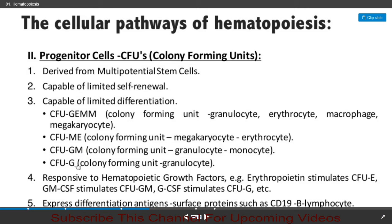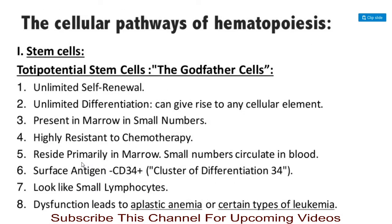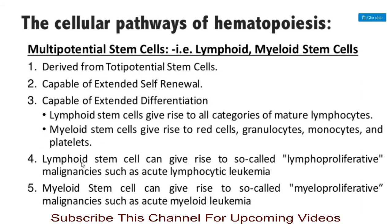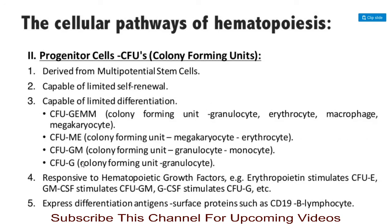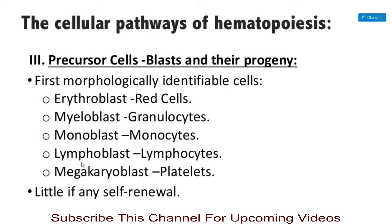These progenitor cells are responsive to hematopoietic growth factors. For example, erythropoietin stimulates CFU-erythrocyte; GM-CSF stimulates CFU-GM; and G-CSF stimulates CFU-granulocytes. These cells also express differentiation antigens — surface proteins such as CD19 on B lymphocytes.